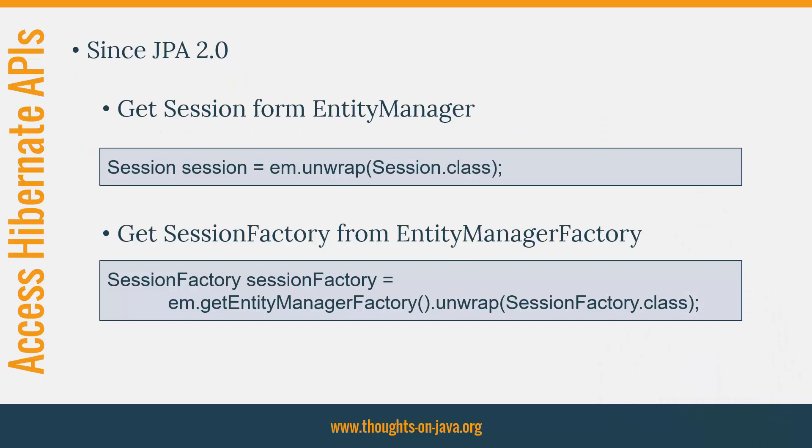Since version 2.0, JPA provides easy access to the APIs of the underlying implementations. The EntityManager and the EntityManagerFactory provide an unwrap method which returns the corresponding classes of the used JPA implementation. In the case of Hibernate, these are the Session and the SessionFactory.